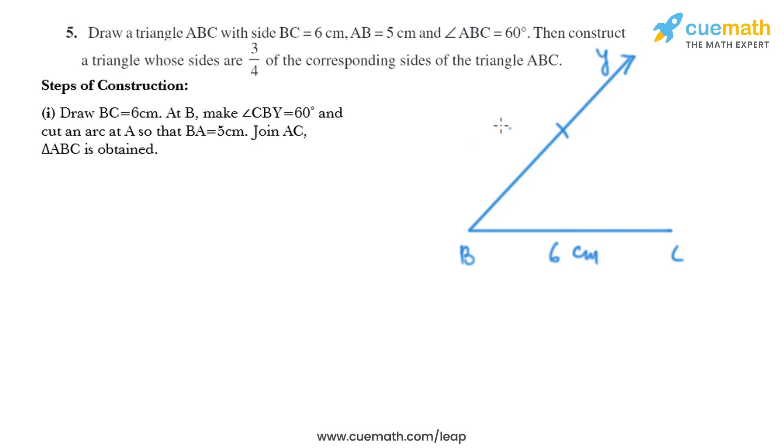Then we need to join AC, so we'll draw a line like this and we have got triangle ABC. Now in the next step, draw the ray BX such that angle CBX is acute.